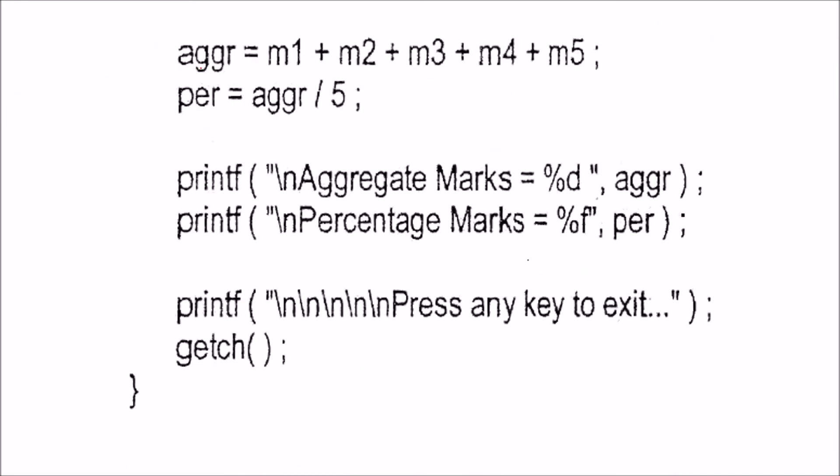You just have to add all these and give it to aggr aggregate. And once you divide this aggr by 5, this will be the percentage. Now print these two, that is aggr and per. This will be %d and this will be %f. And just come out.